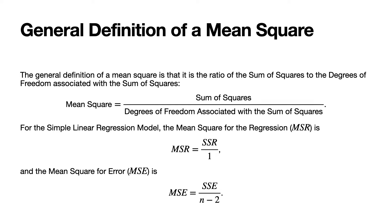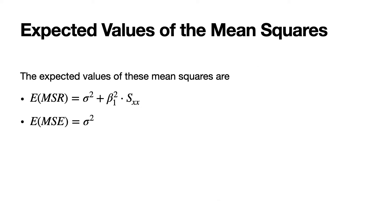The mean square for error, denoted MSE, is defined to be the sum of squares error, SSE, divided by its degrees of freedom, which is N minus two. The expected values of these mean squares are as follows: the expected value of the mean square for regression, MSR, is equal to sigma squared plus beta1 squared times S sub xx. And the expected value of the mean squared error, MSE, is sigma squared.